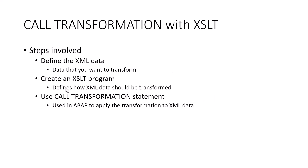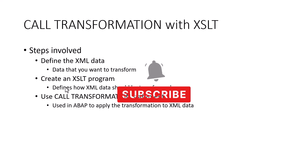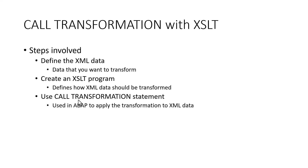The steps involved in using the XSLT transformation: the very first step is you want to define the XML data, and this is the data that you want to transform. Then you want to create the XSLT program. In the previous session, we created the simple transformation and there was a graphical way of creating it, but this is not available with XSLT, so you would have to create it manually. And then you would use the call transformation statement, which is used in ABAP to apply the transformation to XML data.